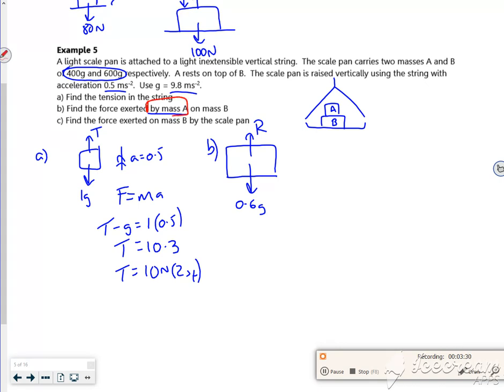Actually, because it's by mass A, I'm going to do it as 0.4. I'm going to do it as a resultant force pushing down. So what I've got is, F equals MA, I've got R minus 0.4G is 0.4 lots of 0.5. If I rearrange that, it gives me an R value of roughly 4.1 newtons to 2 sig fig.